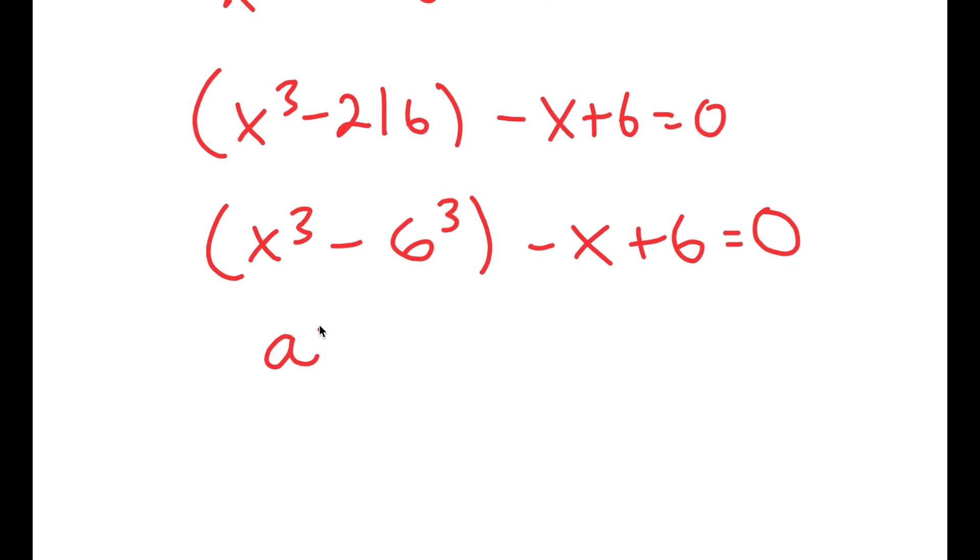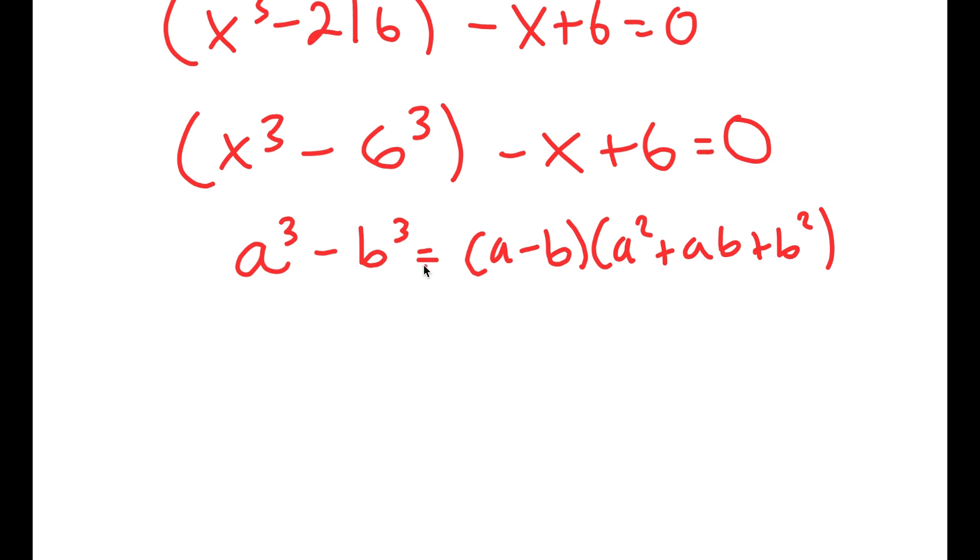And now if I have something in the form a to the power of 3 minus b to the power of 3, this is equal to a minus b times a squared plus ab plus b squared. In this case, a is x and b is 6.